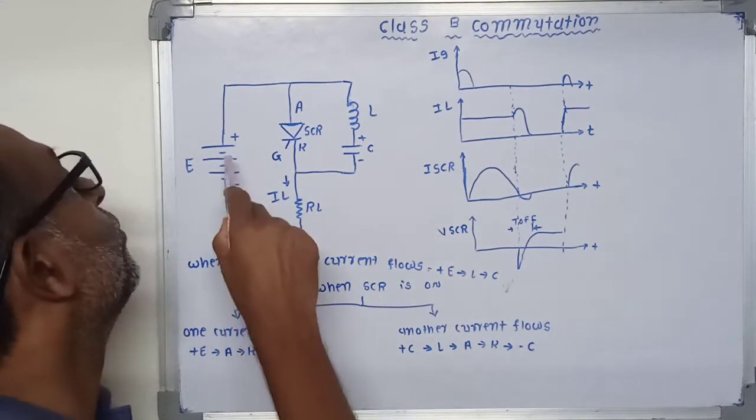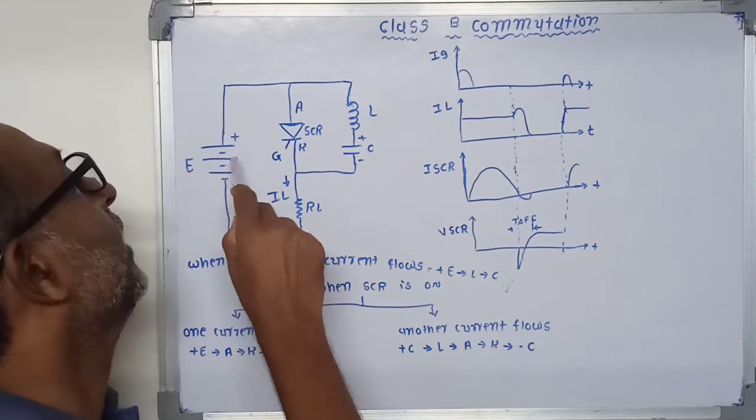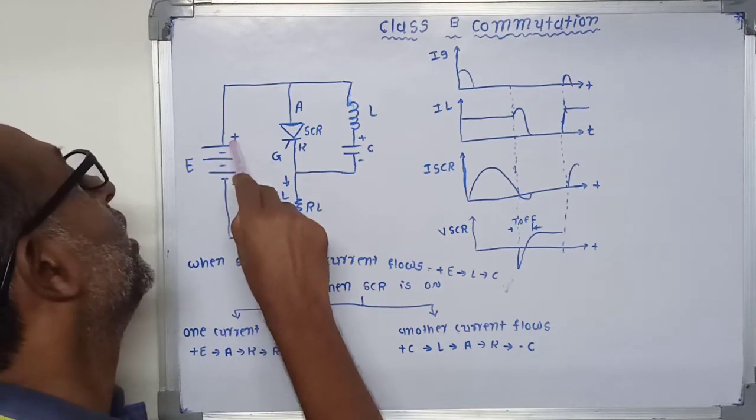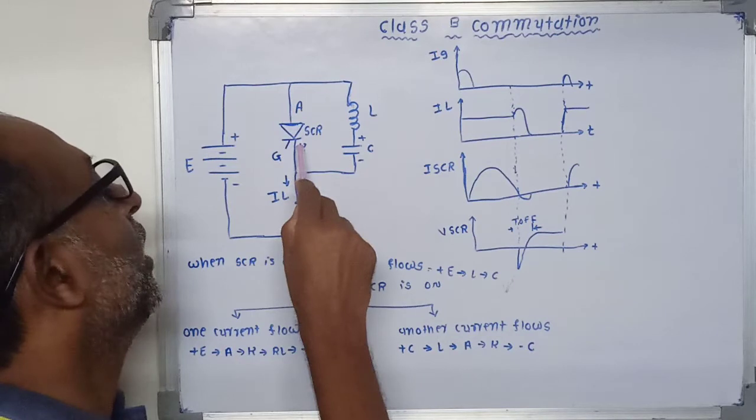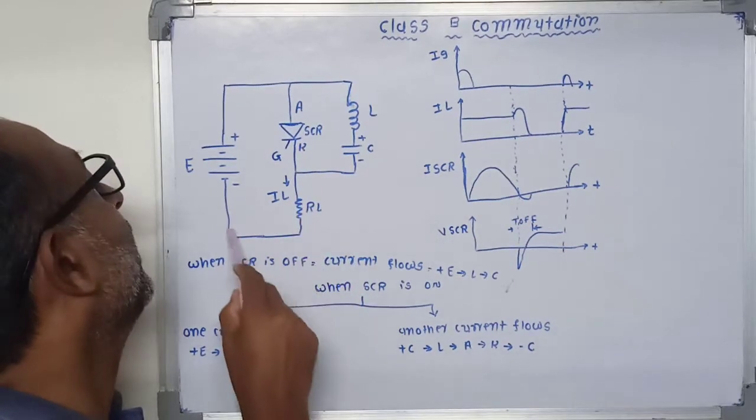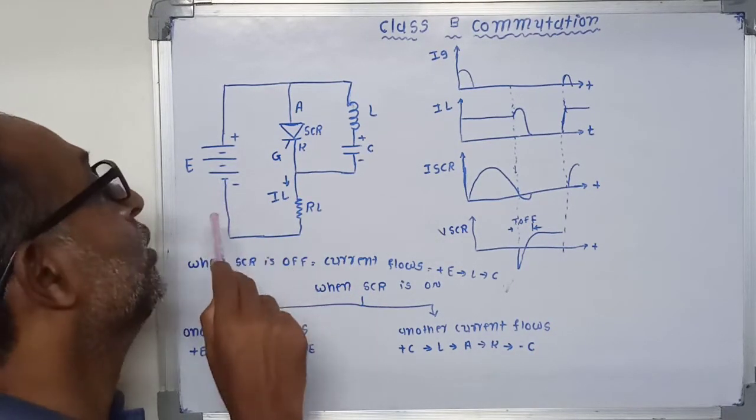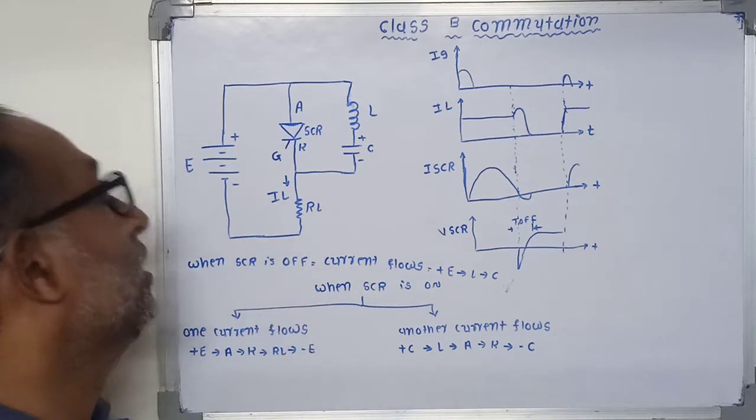Current flows due to the supply voltage and its path is positive E to anode to cathode to Rm and the negative terminal of the battery or supply voltage. This is called the load current.